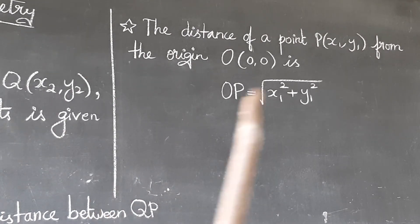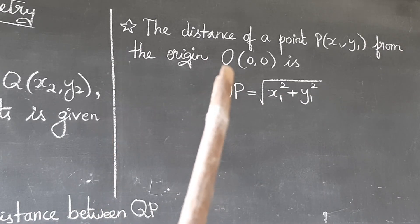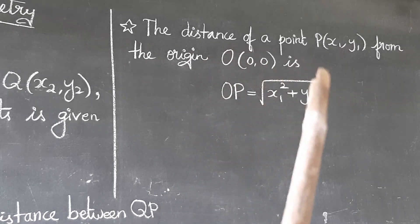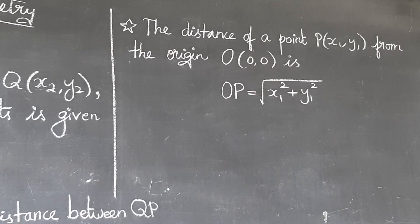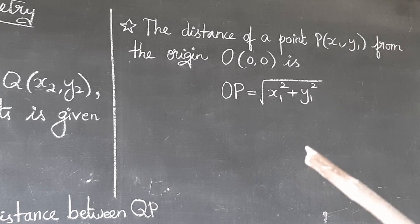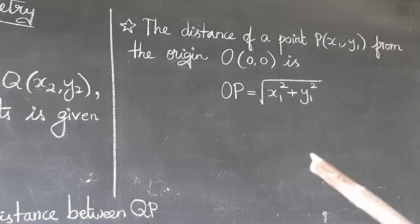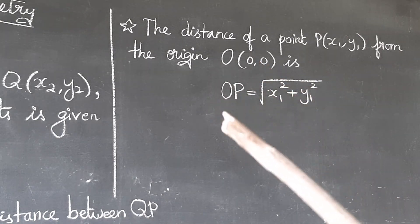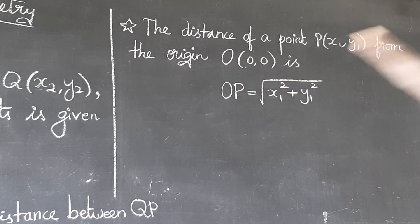The third important point: the distance of point P(x1, y1) from the origin O(0, 0). The origin is where the x-axis and y-axis intersect, at coordinates (0, 0). The distance OP = √(x1² + y1²).